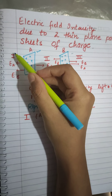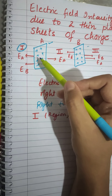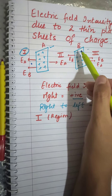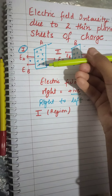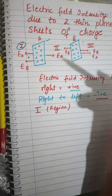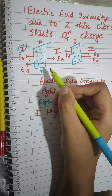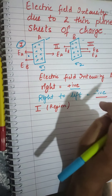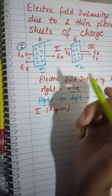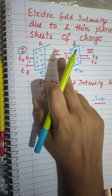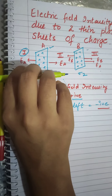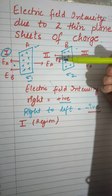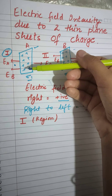Let's see the first region. Sheet A — since it is positively charged, the direction of E is outward. So E is outward in the left region, and also in the middle region. Since it is positively charged, the direction of repulsion, meaning the direction of the electric field, is outward. Its surface charge density is sigma 1 and the other sheet's is sigma 2. In the second region the direction of E is outward — meaning it goes toward the right side. For sheet B, since it is positive, E goes toward the left side, so the directions in region 2 are opposite.